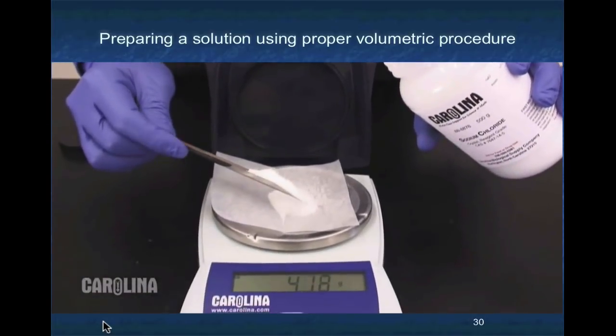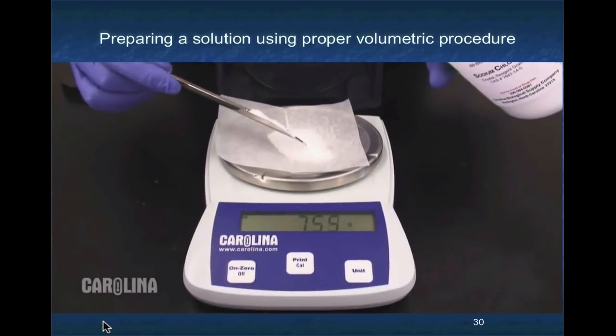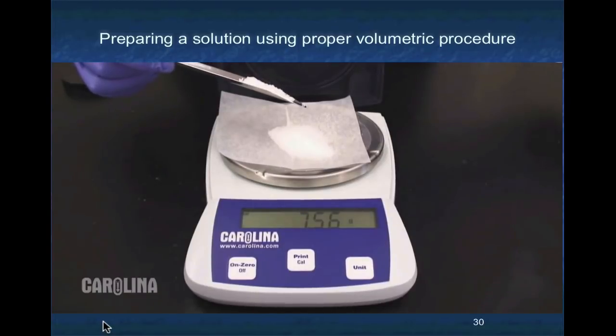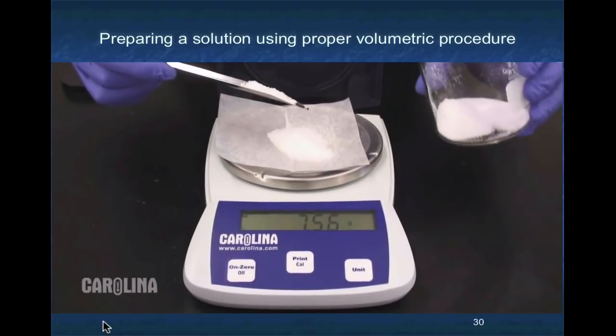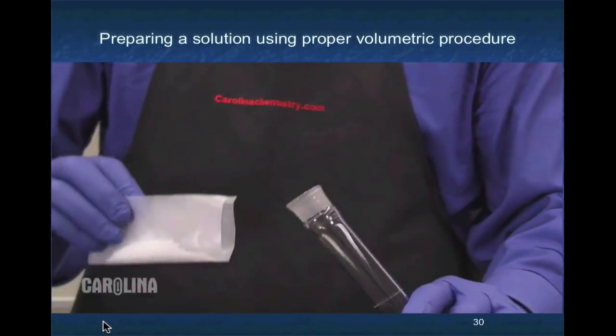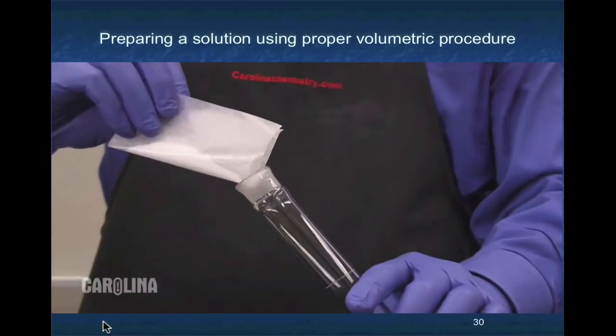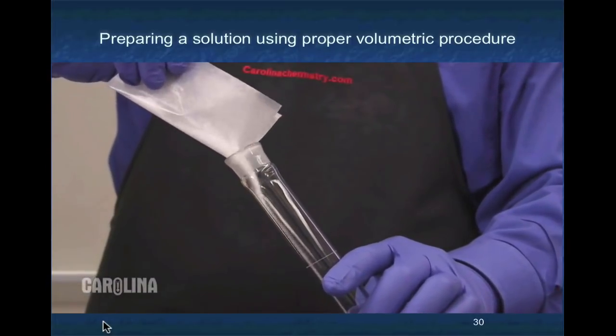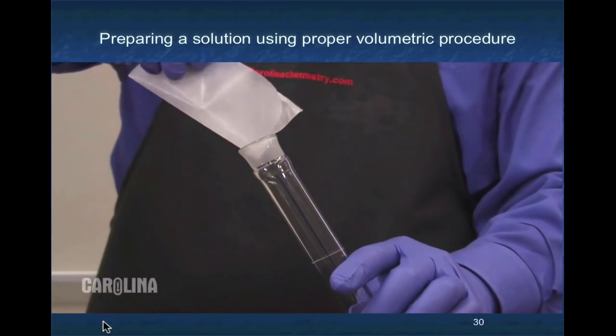Note that if you go over the desired mass, it's never appropriate laboratory procedure to put the excess reagent back into the original container. Always use an additional container to collect the excess. Once you've measured out your solid and recorded the exact mass, transfer all of the solid to the appropriate sized volumetric flask.